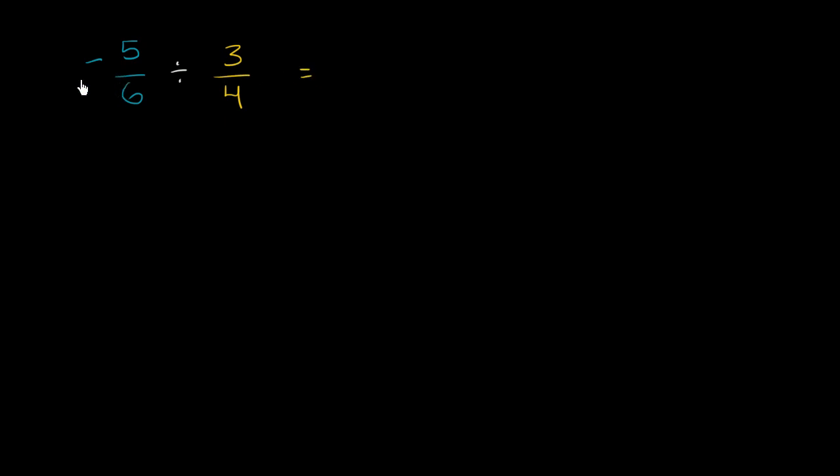So this is going to be the exact same thing as negative 5/6 times the reciprocal of 3/4, which is 4 over 3. I'm just swapping the numerator and the denominator. So it's going to be 4 over 3.